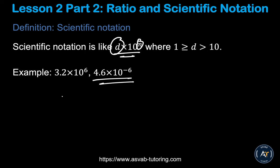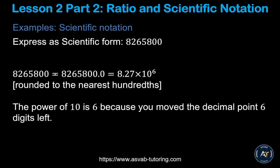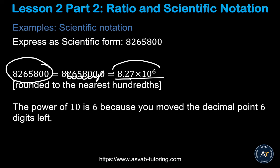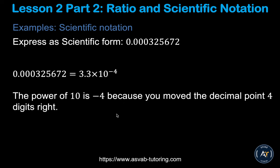Now let's learn how to convert a standard number into scientific notation. Take the number 8,265,800 in standard form. Place a decimal after the first digit, then write one or two digits depending on your answer options. Then write times 10 to the power equal to the number of digits after the decimal point. Counting the digits after the decimal — 1, 2, 3, 4, 5, 6 — you get 10 to the power of 6. So 8,265,800 equals 8.2658 times 10 to the 6th.